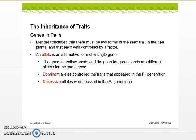Mendel concluded that there must be two forms of the seed trait in the pea plants and that each was controlled by a factor. Here's the words you're going to have to know. An allele is an alternative form of a single gene. The gene for yellow seeds and the gene for green seeds are different alleles for the same gene. Dominant alleles control the traits that appear in the F1 generation, while recessive alleles were masked in the F1 generation and couldn't be seen.